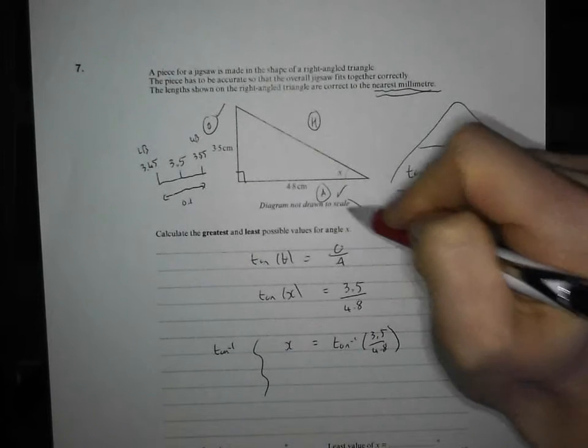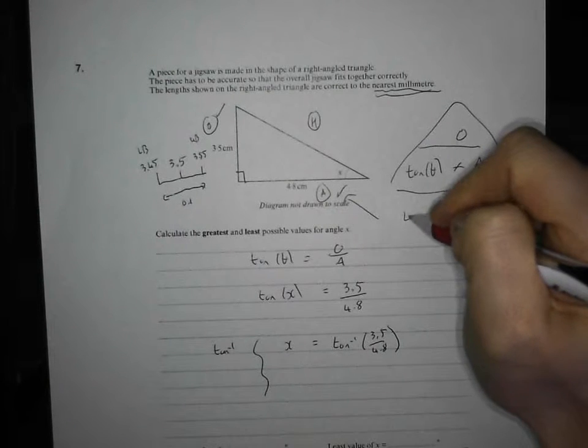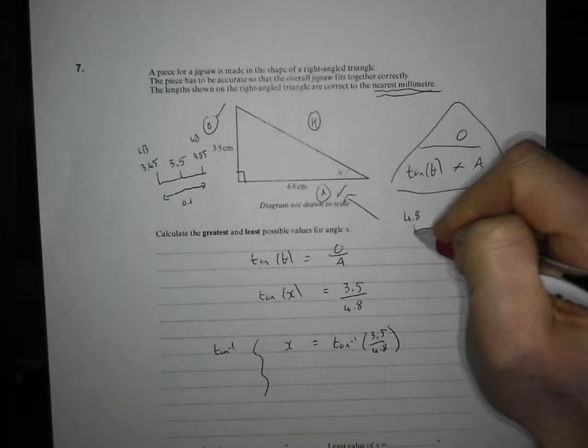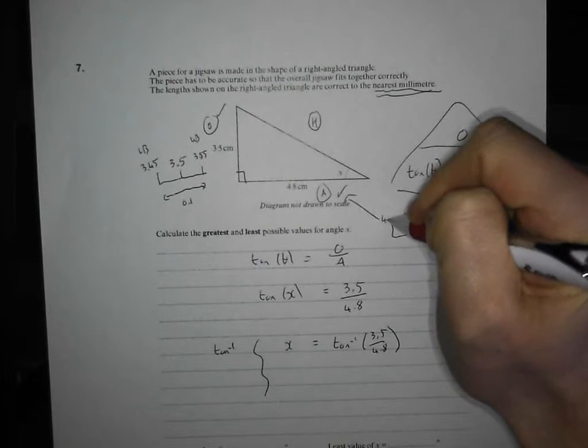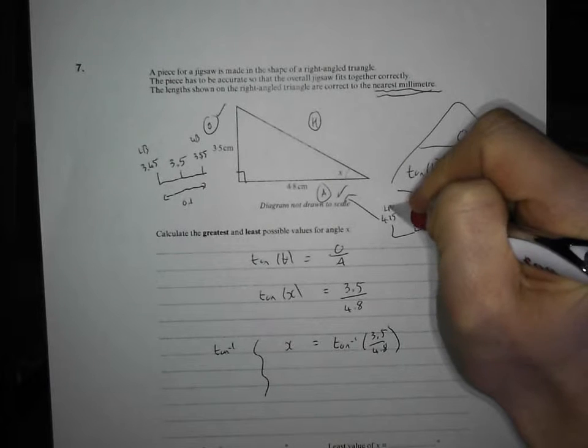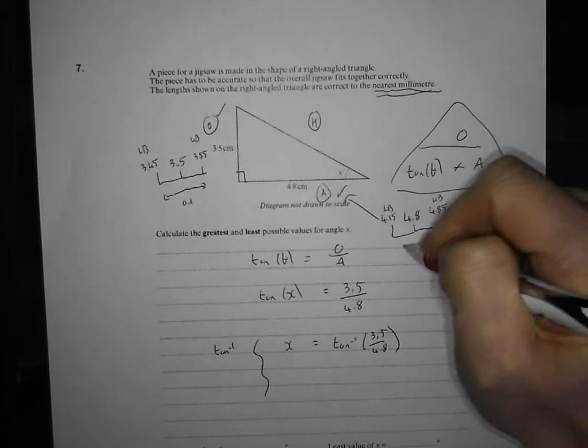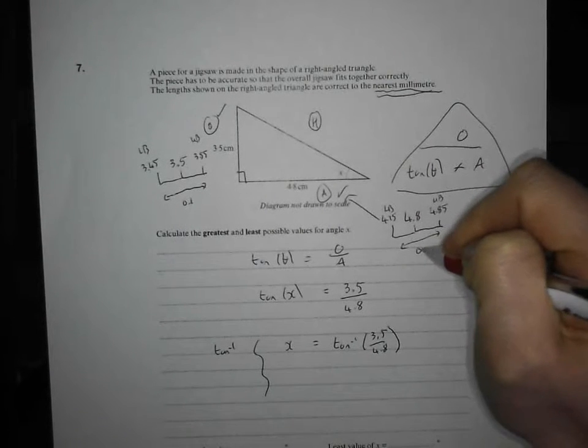Likewise, we're going to do something similar with the 4.8. So we've got 4.8 slap bang in the center, and it's going to go up to 4.85, and it's going to go down to 4.75. Lower bound, upper bound, distance of 0.1 centimeters.